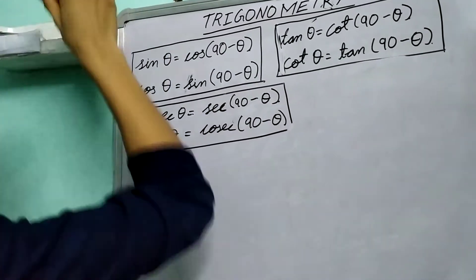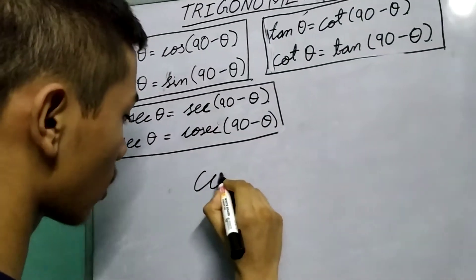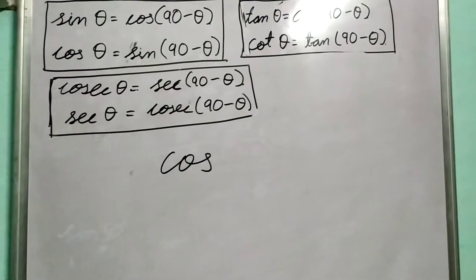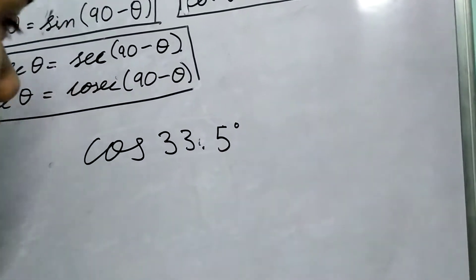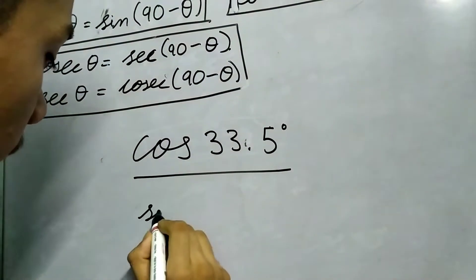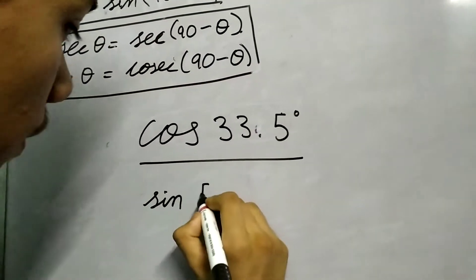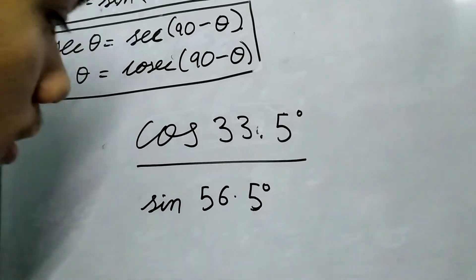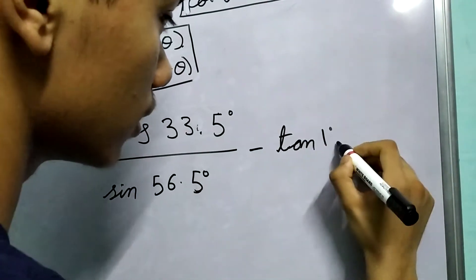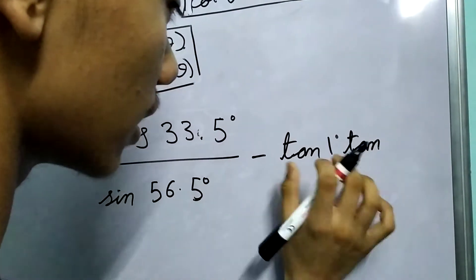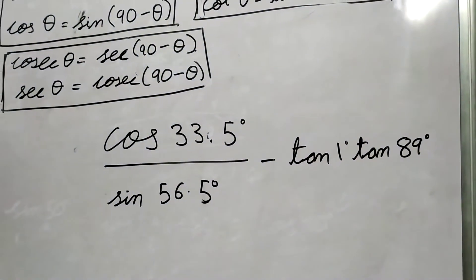Now let us do another slightly tricky one. Let us take cos of 33.5 degrees and divide it by sin of 56.5 degrees, and then subtract from it tan 1 degree multiplied by tan 89 degrees. How do we go about this?